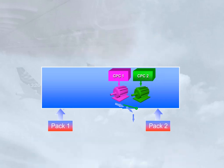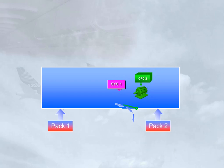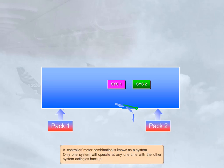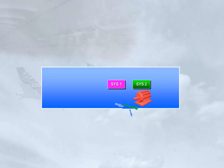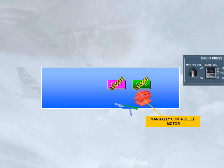A controller-motor combination is known as a system. Only one system will operate at any one time, with the other system acting as backup. A third motor is installed for use in the event of both automatic systems failing, and requires a manual input to open or close the outflow valve.